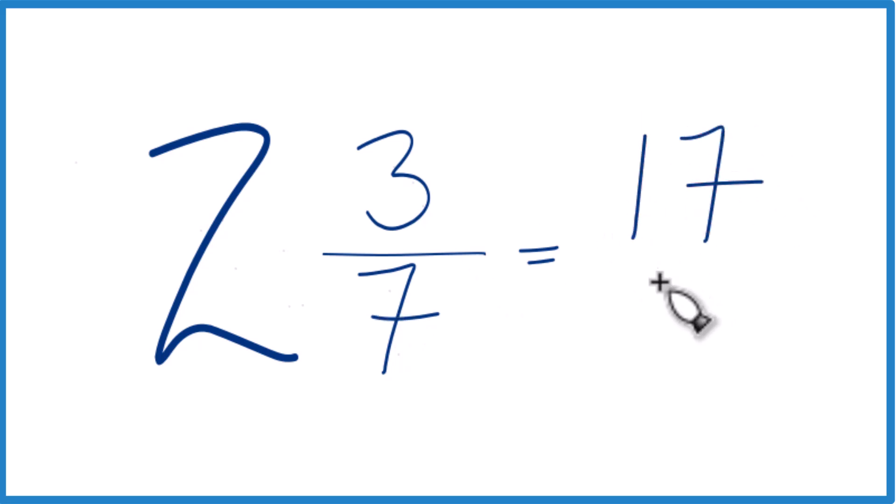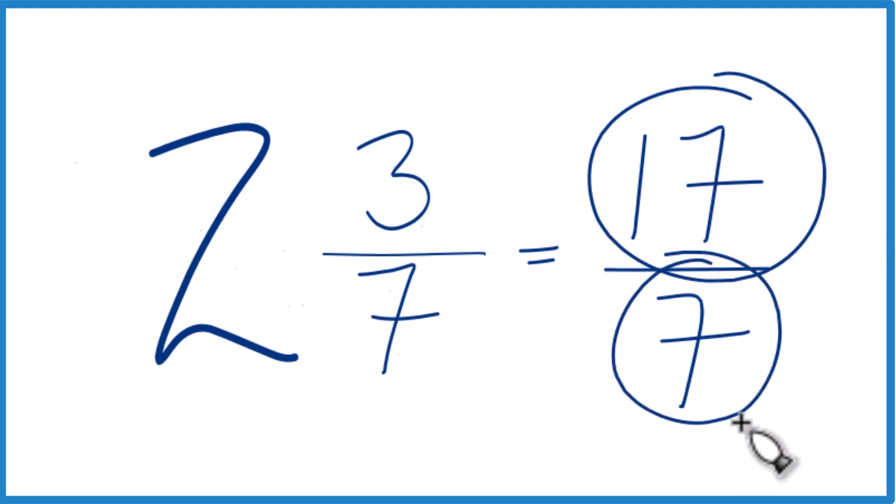And then you bring the 7 across, and you're done. That is the improper fraction for the mixed number 2 and 3 sevenths. Let's do that again. 2 times 7, that's 14. 14 plus 3, that's our 17, the numerator. And we just bring the denominator across, and we have our improper fraction.